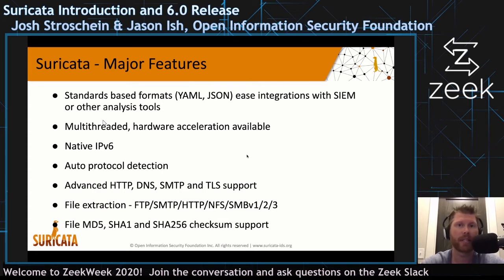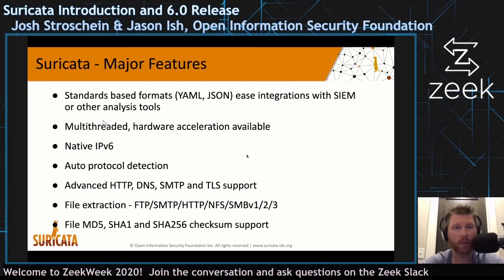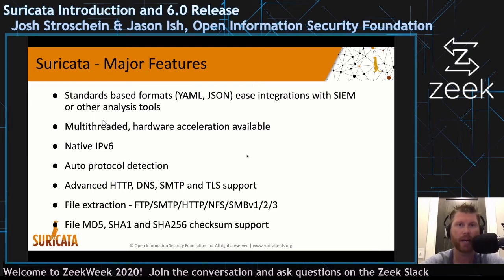Suricata can still get information about the TLS session — the certificate and things — without necessarily having an alert tied to it. There is also advanced support for different application layer protocols: HTTP, DNS, SMTP, and TLS. File extraction is supported across a number of protocols. The file extraction comes from rules, but Suricata does have file identification capabilities and can create checksums and hashes for those files.